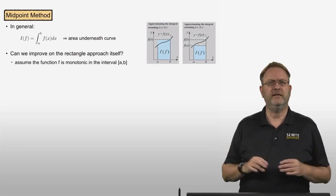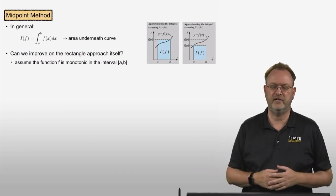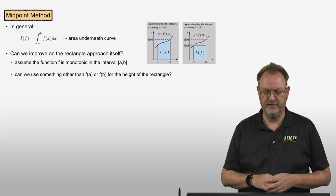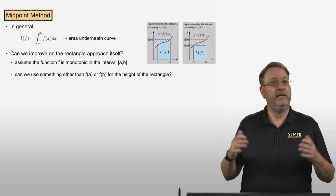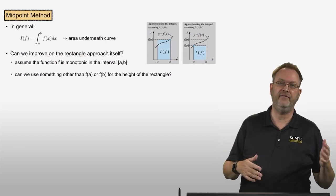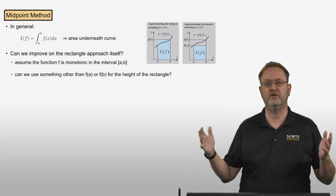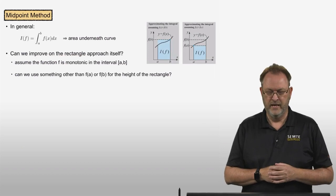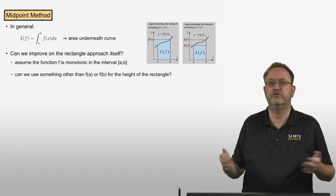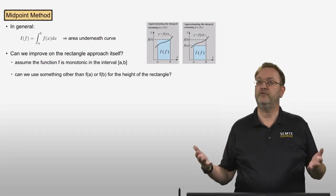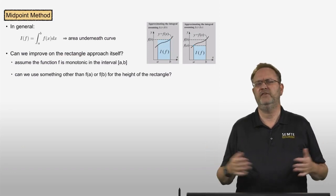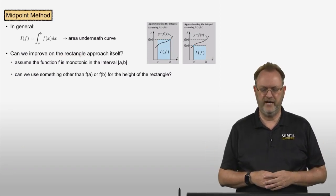I'm going to assume that the function f is monotonic in the interval a to b, just to demonstrate how we can improve this method. In the rectangle method we used either the function value at the left or the right edge of the integral — so either f(a) or f(b) — for the height of the rectangle. But can we use something other than those two values for the height?